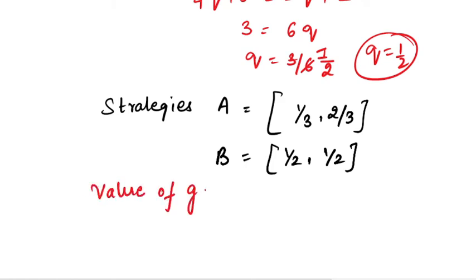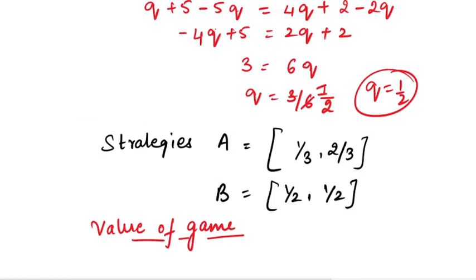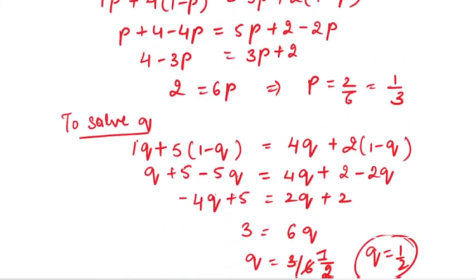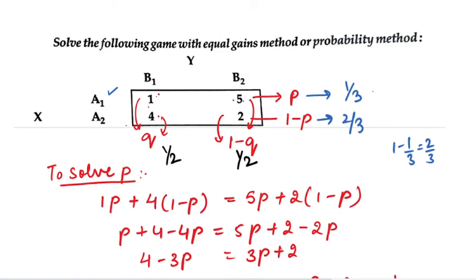Now we need to find the value of the game. Using the formula: multiply bracket A·P + C·(1−P) by Q, plus bracket B·P + D·(1−P) by 1 minus Q. We already know P = 1/3, 1−P = 2/3, Q = 1/2, and 1−Q = 1/2, so let us apply these values.